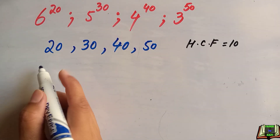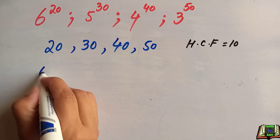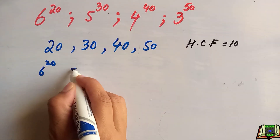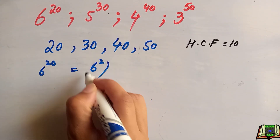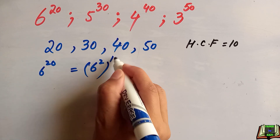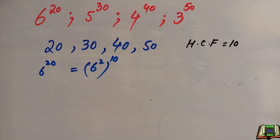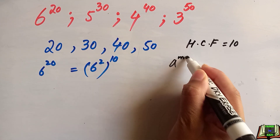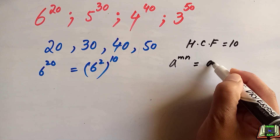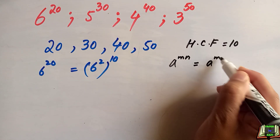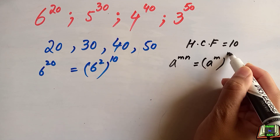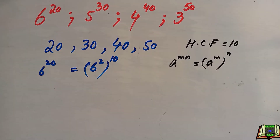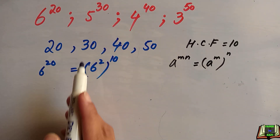We can write 6 to the power 20 as (6 to the power 2) whole to the power 10. Here we use the power formula: a to the power m·n is equal to (a to the power m) whole to the power n. Using the same formula for the other numbers: